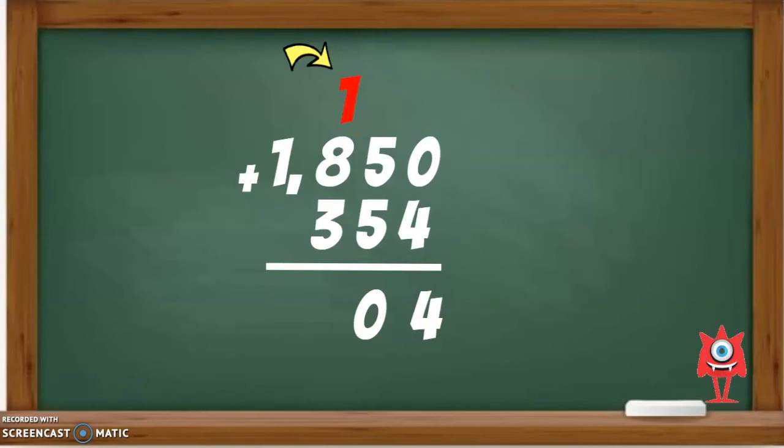Now, you are going to use regrouping. It's really like you are moving a group of 10 to the next column over and leaving whatever is left in the first column. In this case, 0.